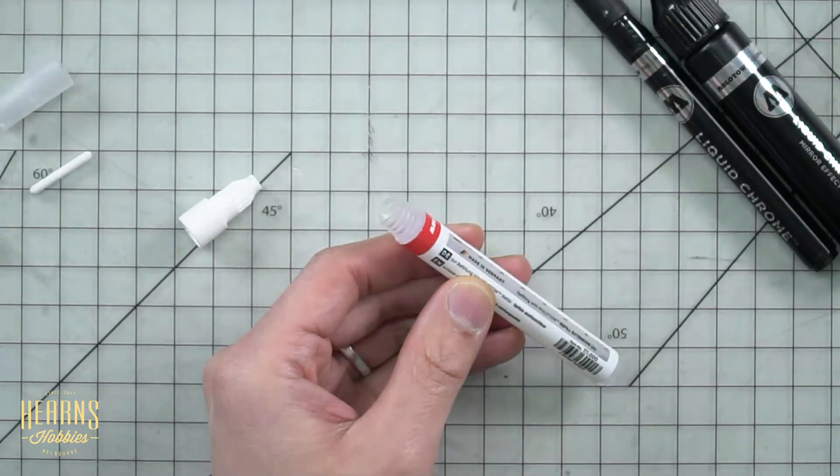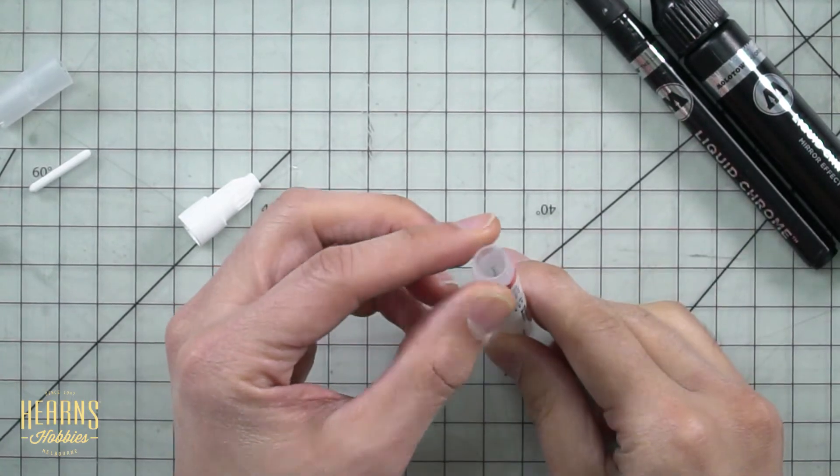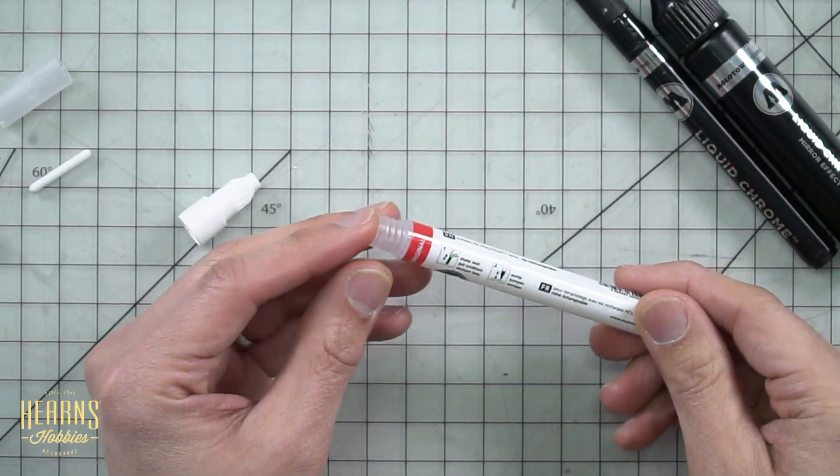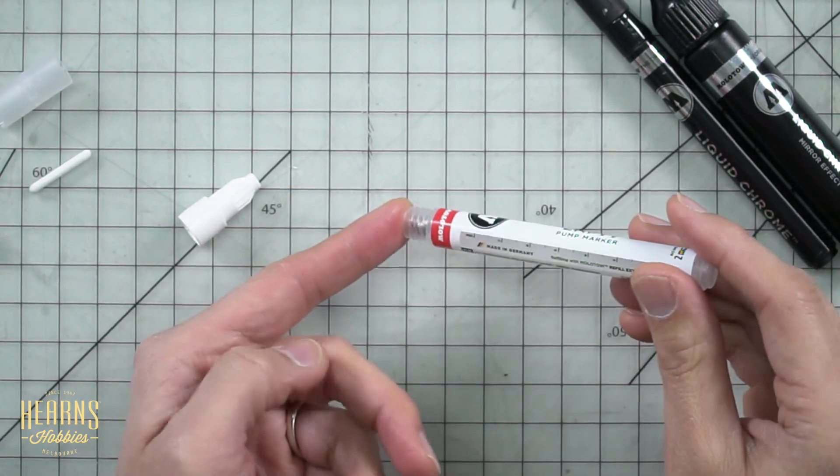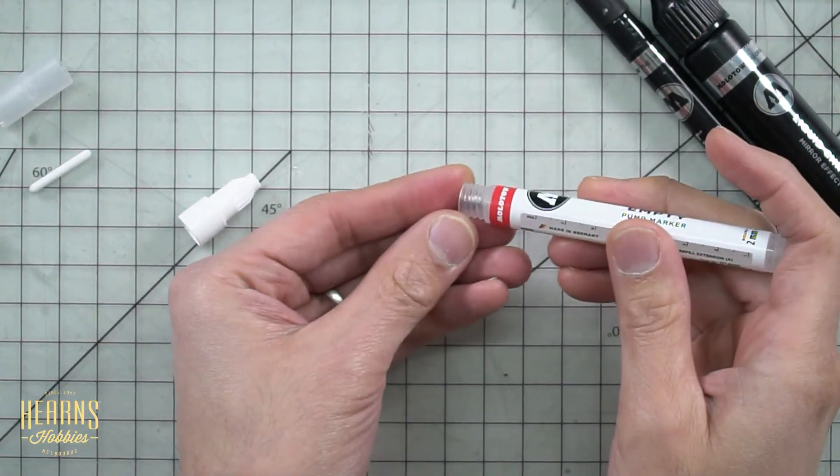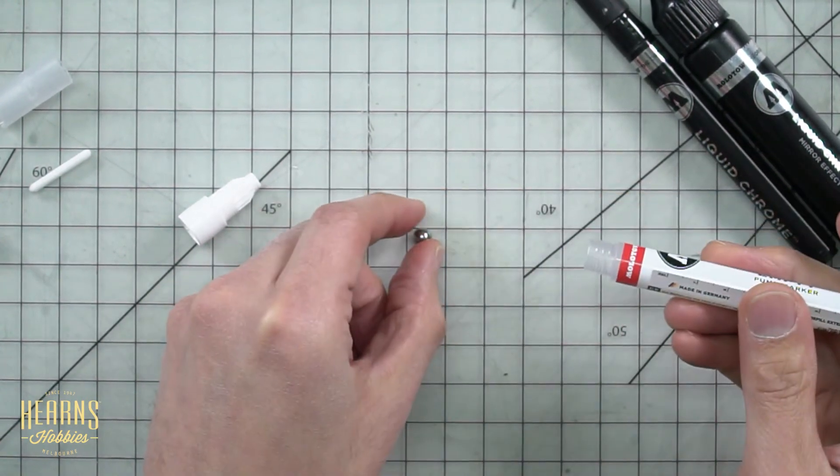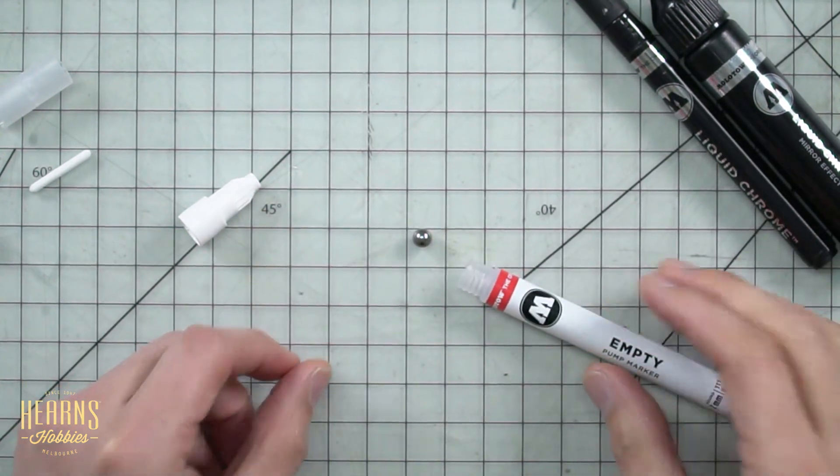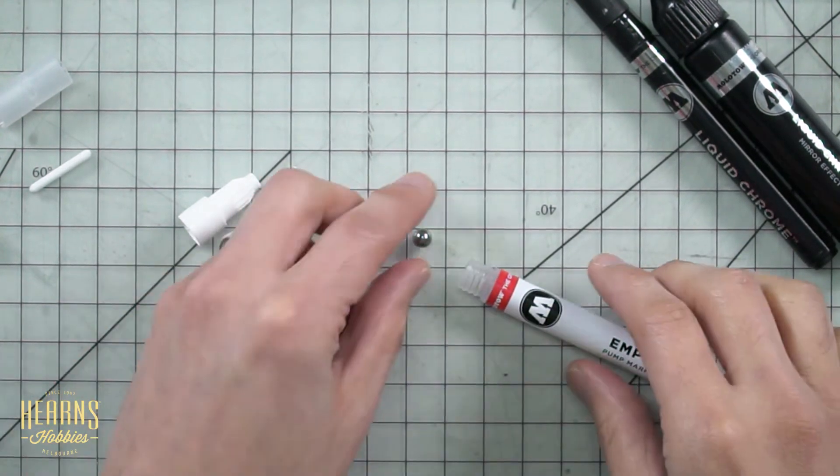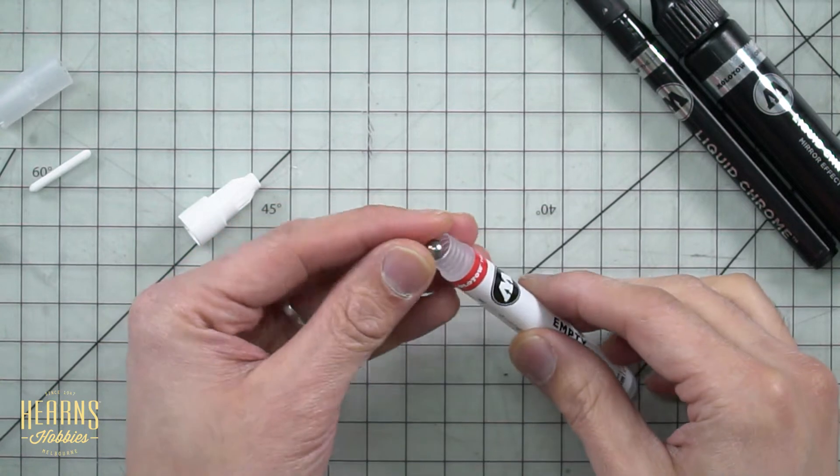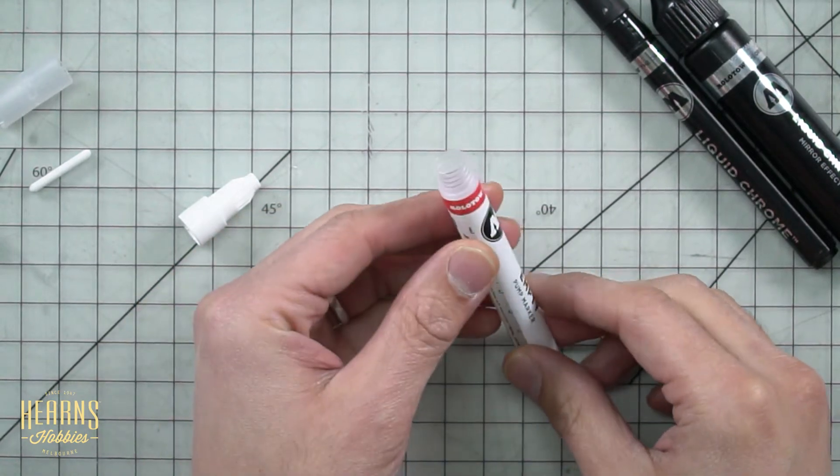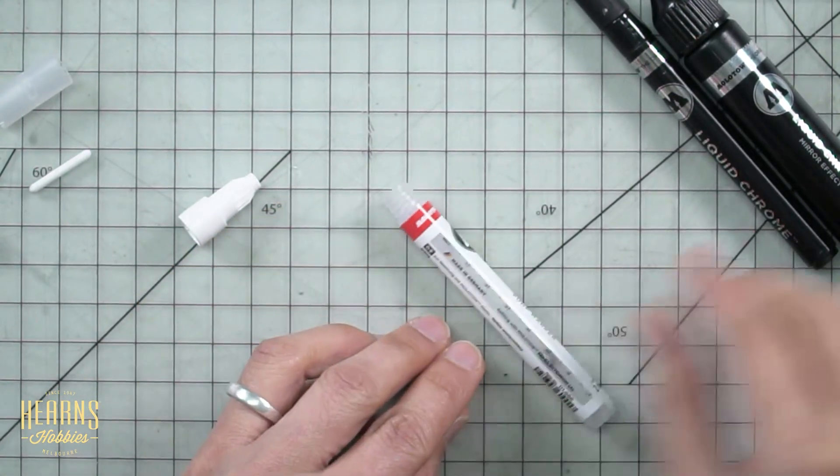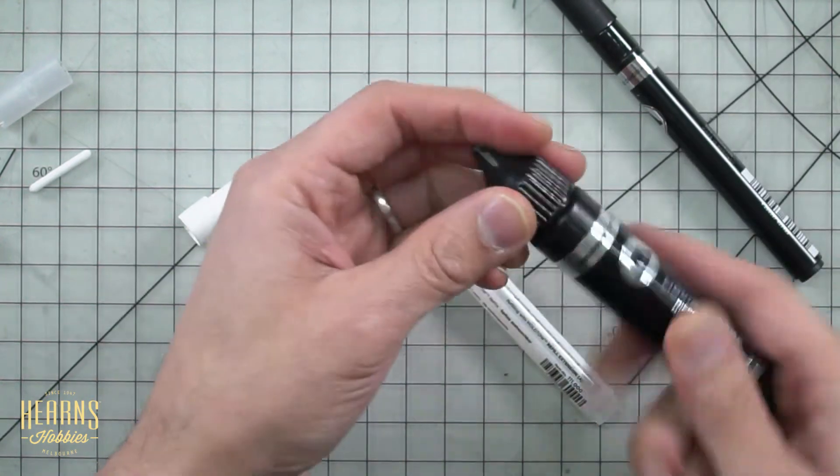So the pen itself is just a tubular reservoir. Now what it also has in it is a ball bearing for mixing. So if I do this, you see the ball bearing just pop out. There's a ball bearing, and that's it. So it's come apart. Now you don't really need to have the ball bearing out. You can leave the ball bearing inside, just be careful not to lose it. And it's just a matter of opening up your refill.